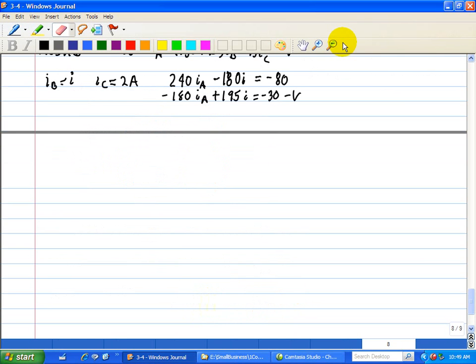Now, we can solve for I using Cramer's rule. So, here, that is, we take the determinant of this matrix that we can form here. 240 minus 180, minus 180 here, and 195 here.